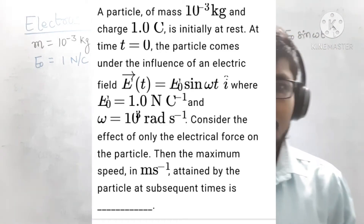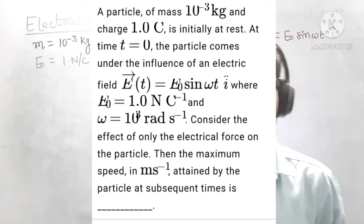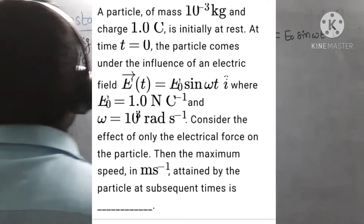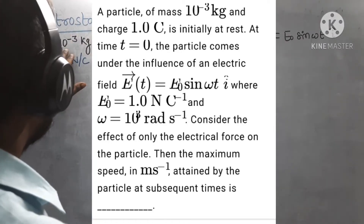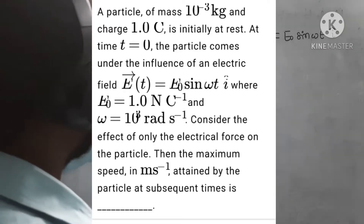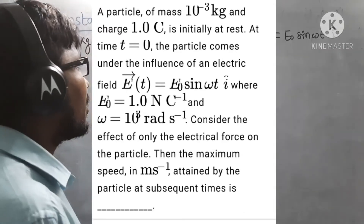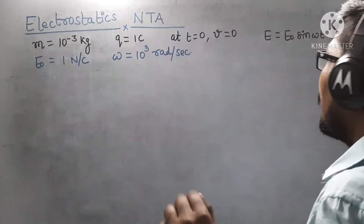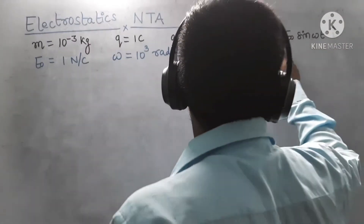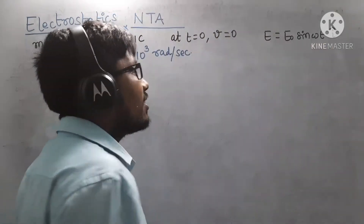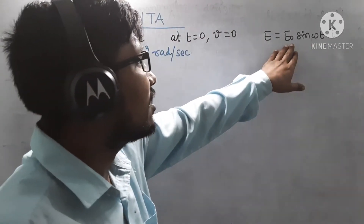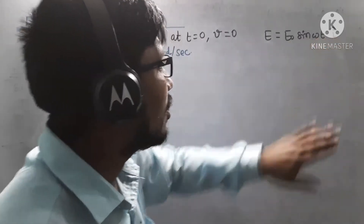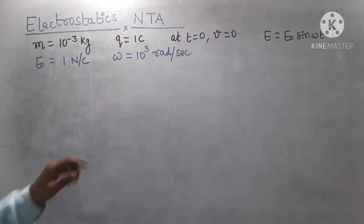As you can see, a particle of mass 10⁻³ kg has a charge of 1 Coulomb, and it is said that initially at t = 0 the particle is at rest. A time-dependent electric field is given as E = E₀ sin(ωt) î, which is directed along the x-axis.